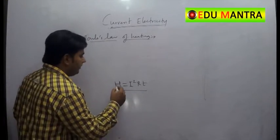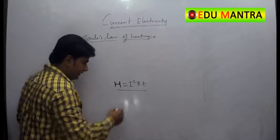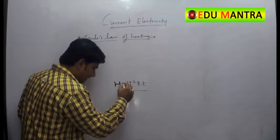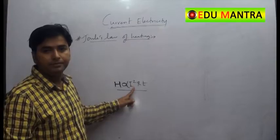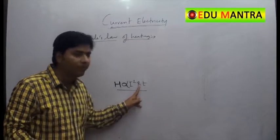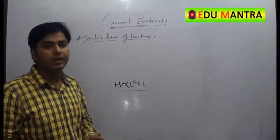So let us see, heat generated in a conductor is directly proportional to the square of current, to the resistance of conductor and to the time for which the current is passed.